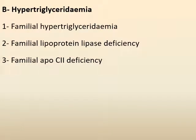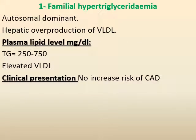Hypertriglyceridemia is subdivided into three forms: familial hypertriglyceridemia, familial lipoprotein lipase deficiency, and familial ApoC-2 deficiency. Familial hypertriglyceridemia is an autosomal dominant disorder in which hepatic overproduction of VLDL is exaggerated. Plasma triglycerides range from 250 to 750 mg/dL with elevated VLDL. The patient has no increased risk of coronary artery disease as this is related to elevated LDL and not VLDL.